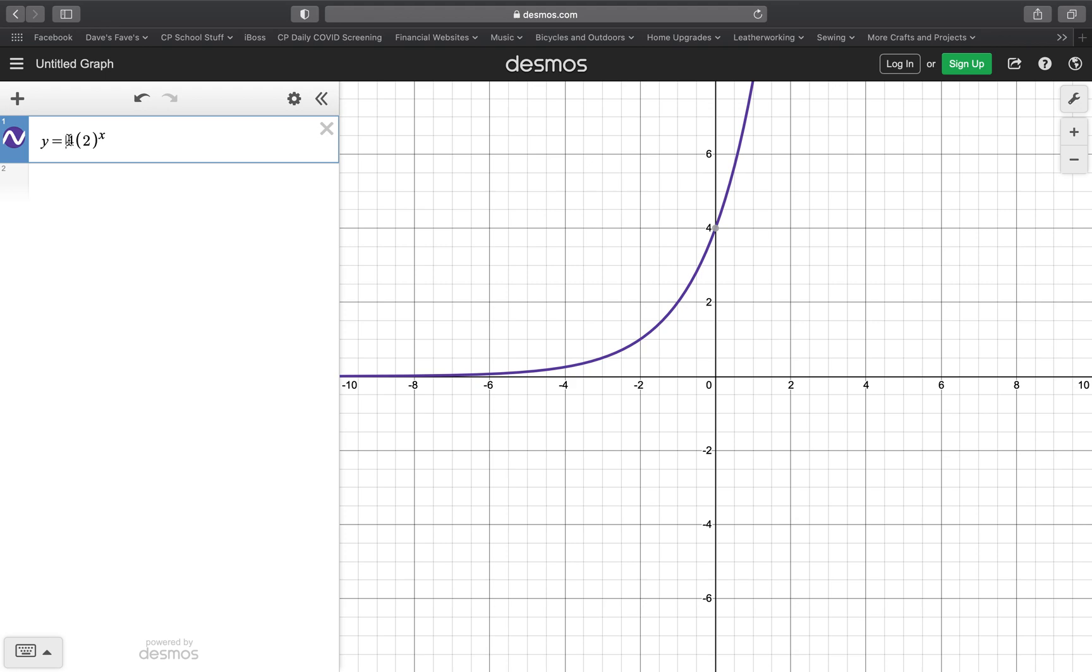So the first question is, what happens when the a value is negative? If you look at the equation, I'm going to put a negative in front of the 4. And if you watch the graph, it reflects over the x-axis. So that negative on the a value causes a reflection over the x-axis.